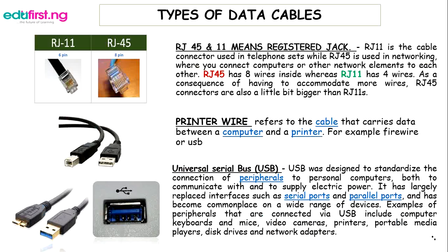Moving on to types of data cables — we have RJ45 and RJ11. RJ stands for Registered Jack. RJ11 is the cable connector used in telephone sets, while RJ45 is used in networking to connect computers or other network elements to each other. RJ45 has eight wires inside whereas RJ11 has four wires. As a result, RJ45 connectors are slightly bigger than RJ11, and RJ45 has eight pins while RJ11 has four pins.